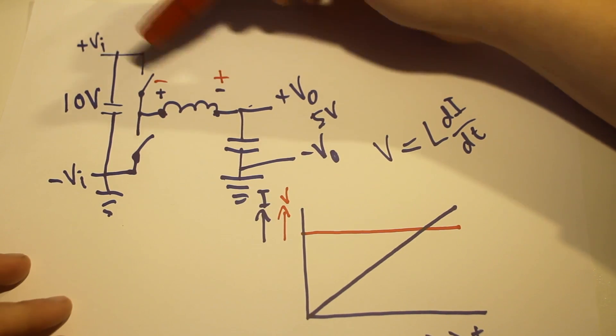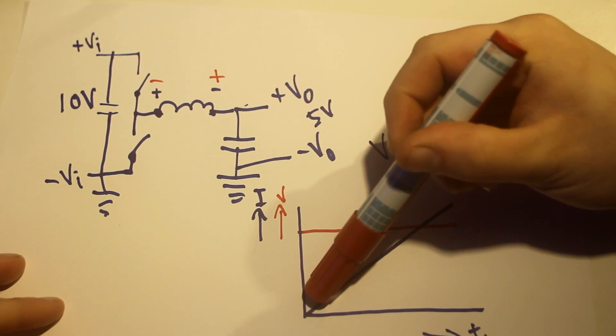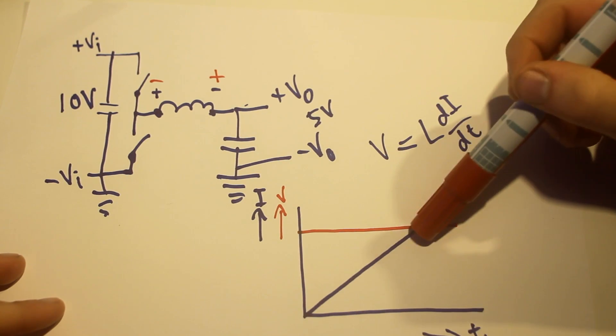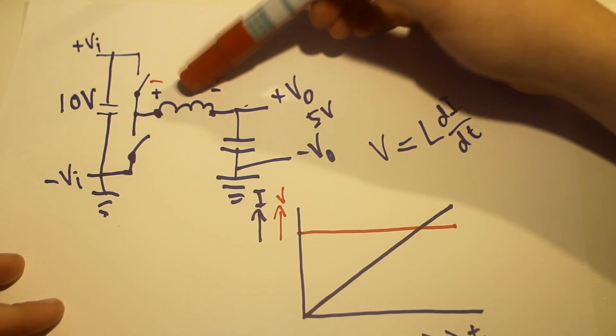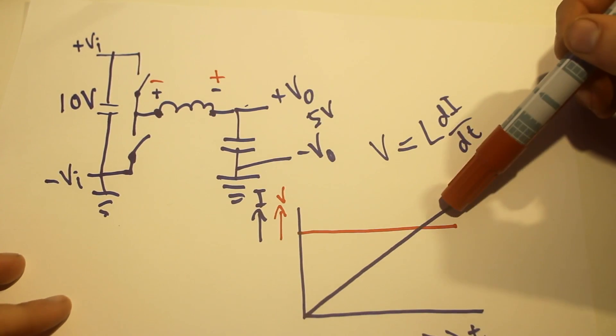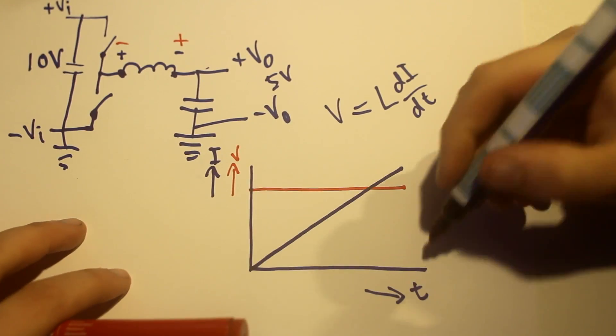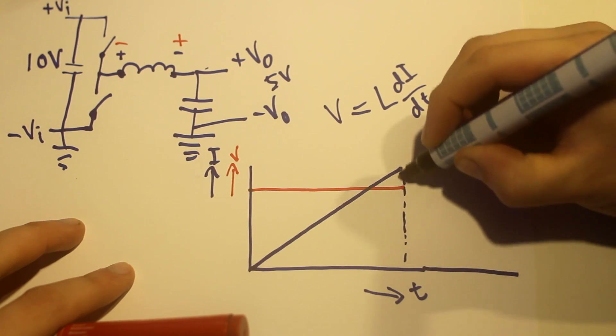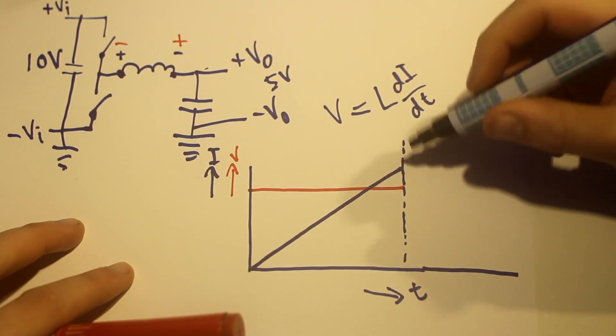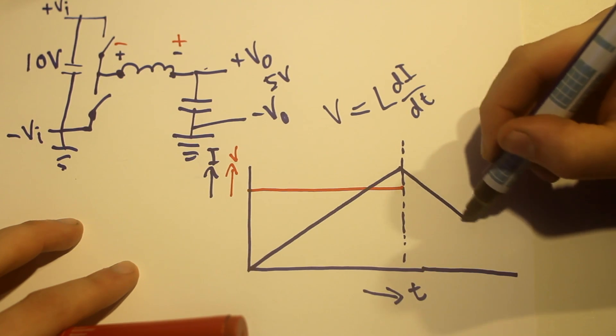So what happens to the current? First, we put a positive voltage on the inductor, and the current kept increasing linearly. If you put a negative voltage on it, the current decreases linearly. So just imagine time going on. At this instant, we changed from the upper to the lower switch. So now the current goes down.